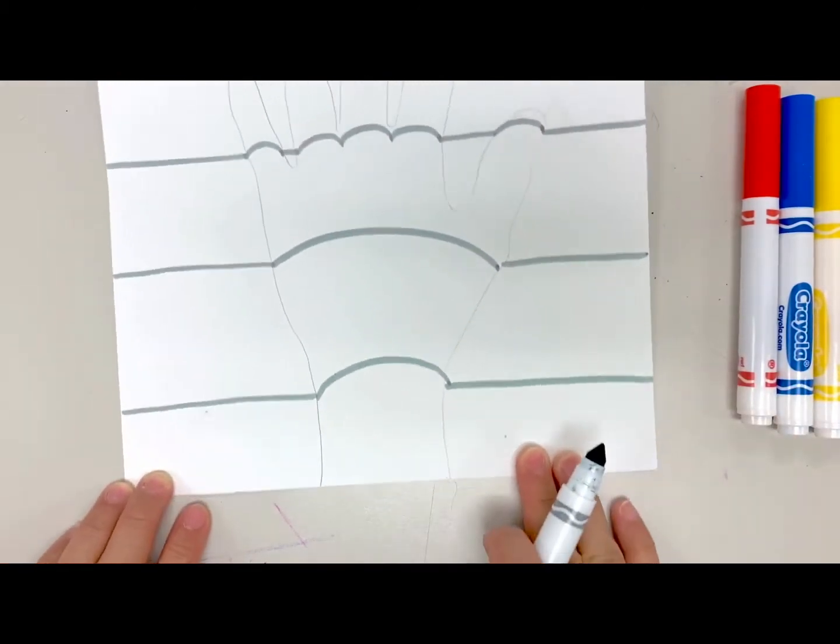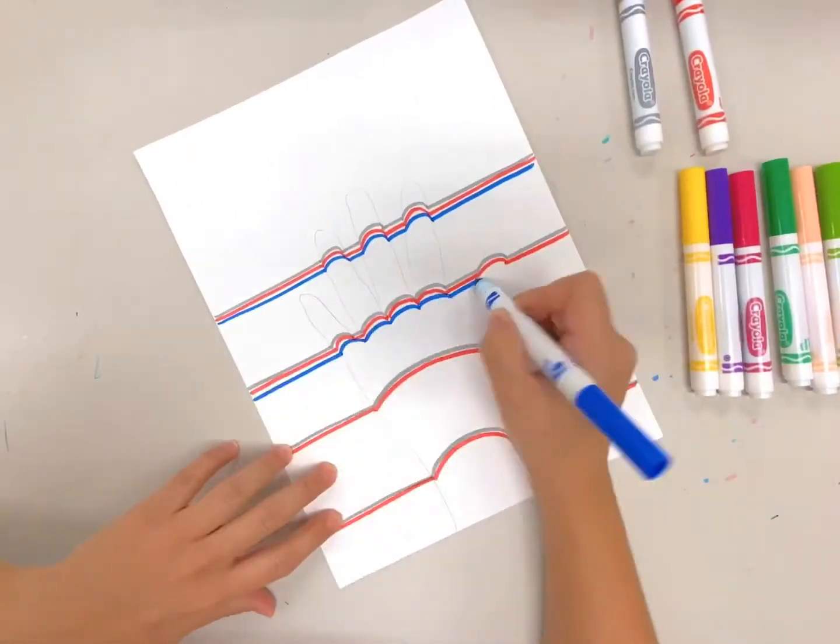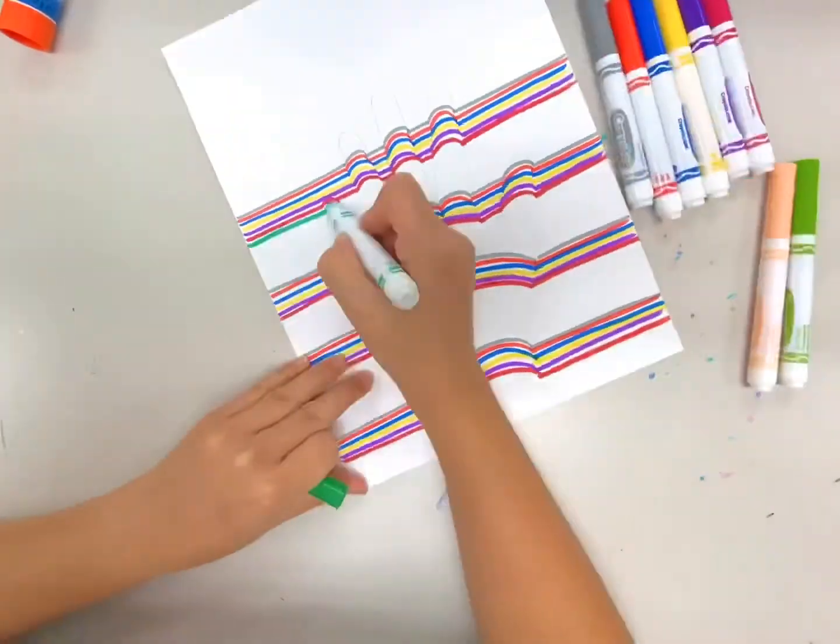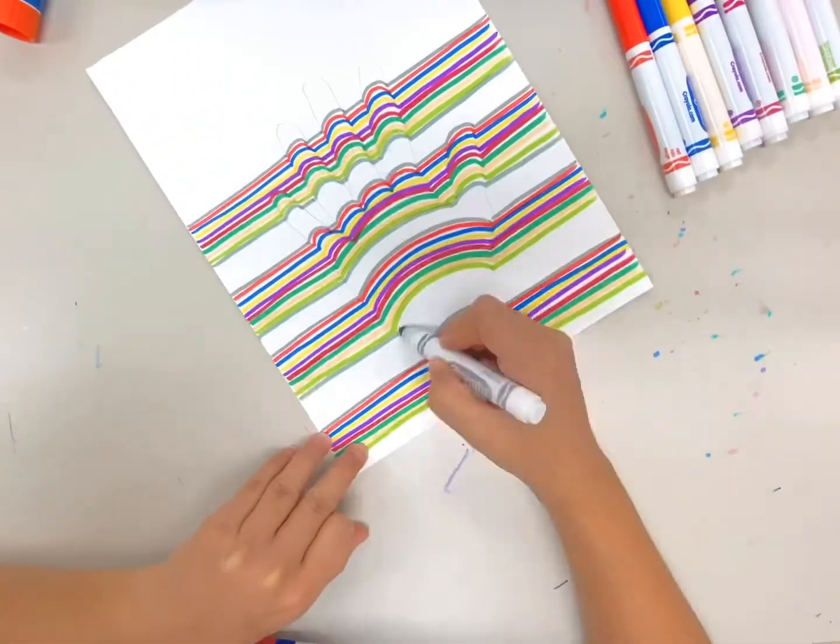After you've gotten your guidelines in place, you can repeat this process either in a pattern or you can use a color family like warm colors, cool colors, primary, secondary, complementary. It's up to you.